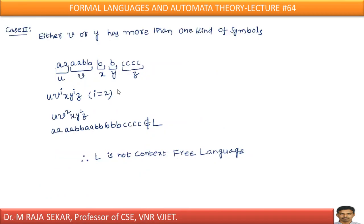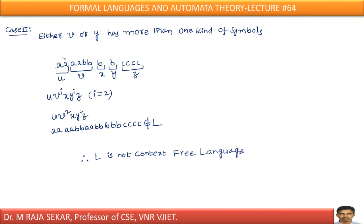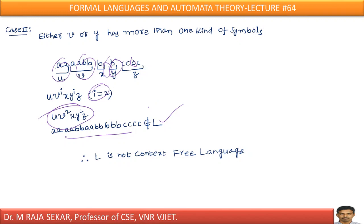In case 2, if I split the string in some other manner and again take i = 2, calculating u v^2 x y^2 z, again the result does not belong to L. Therefore, it is contradicting our assumption that L is context free. Therefore, L is not a context free language.